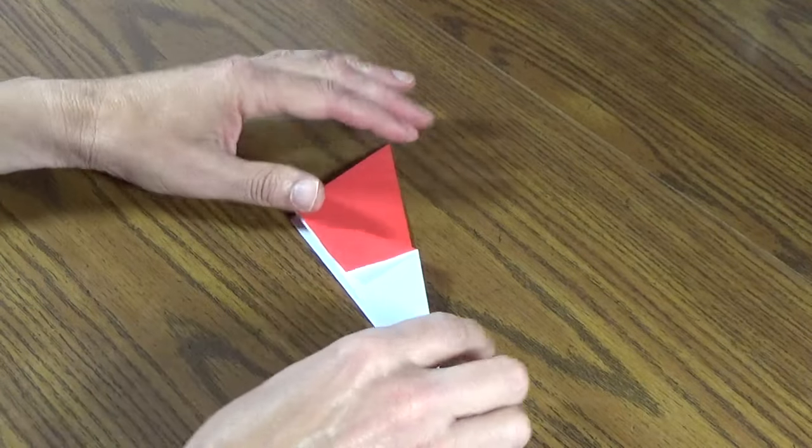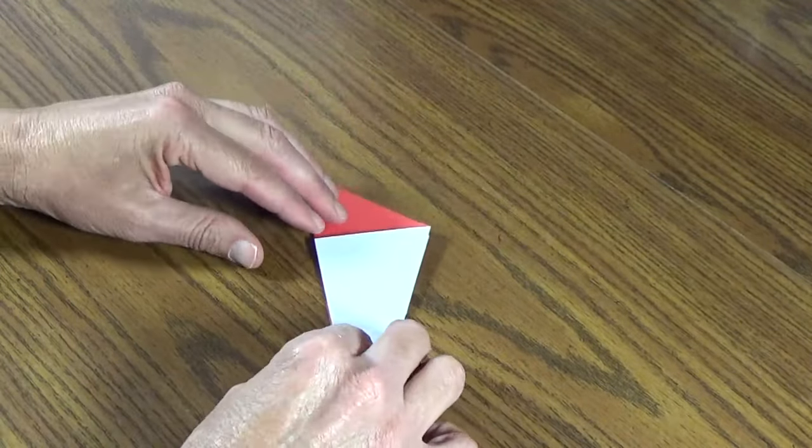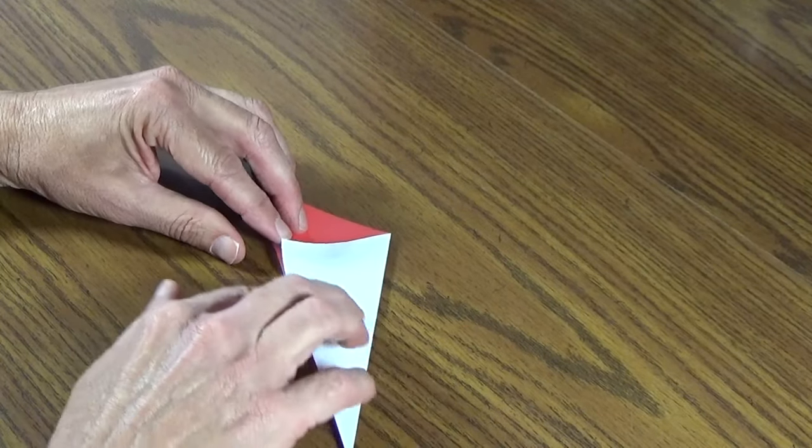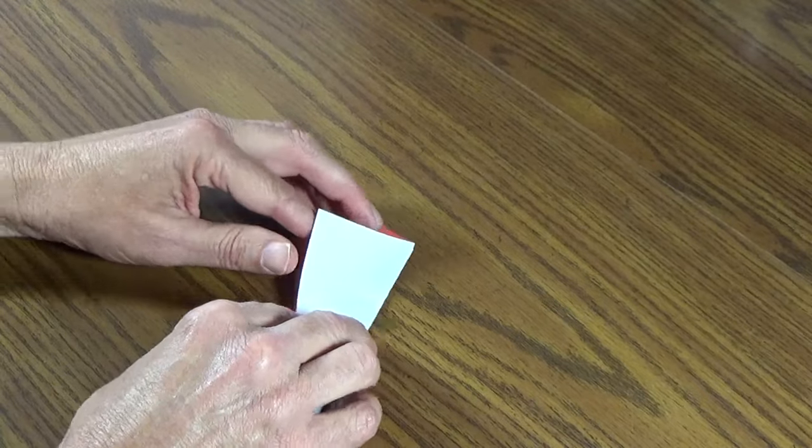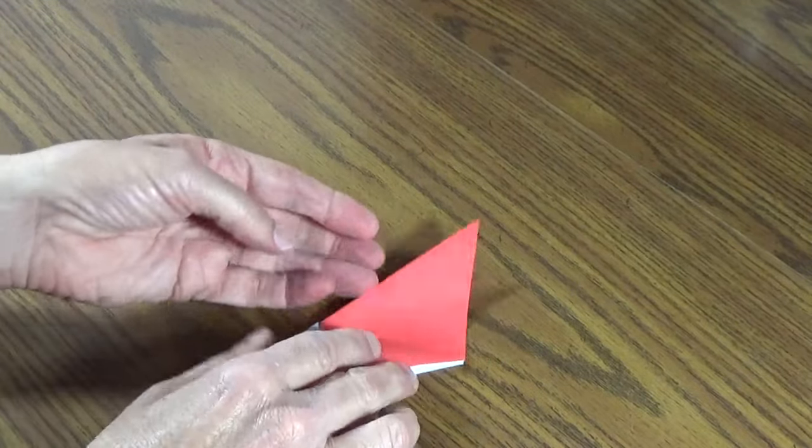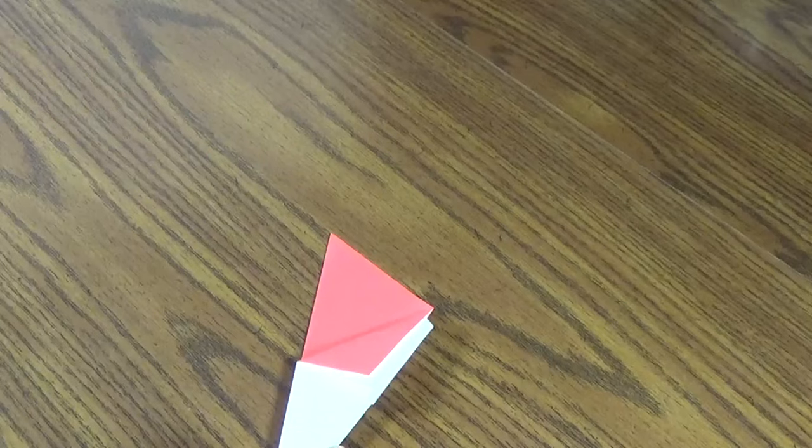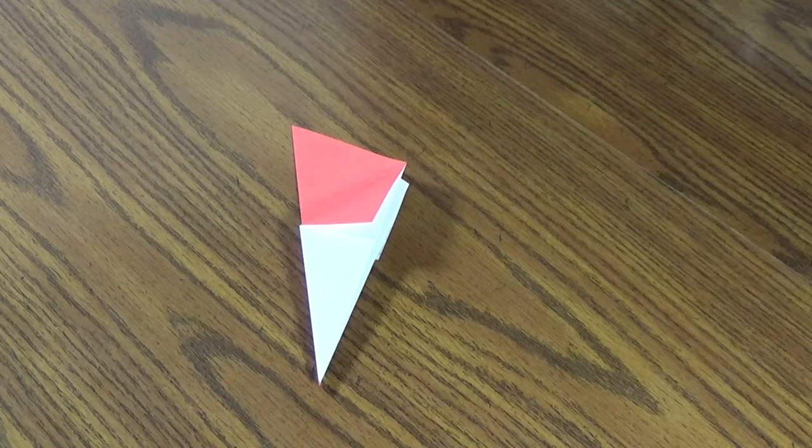We need to do the other side that way, so flip it over and take the point of this white paper and fold it over to this edge. So we have both sides that now look the same, and the good news is those are all the folds that we need to make.